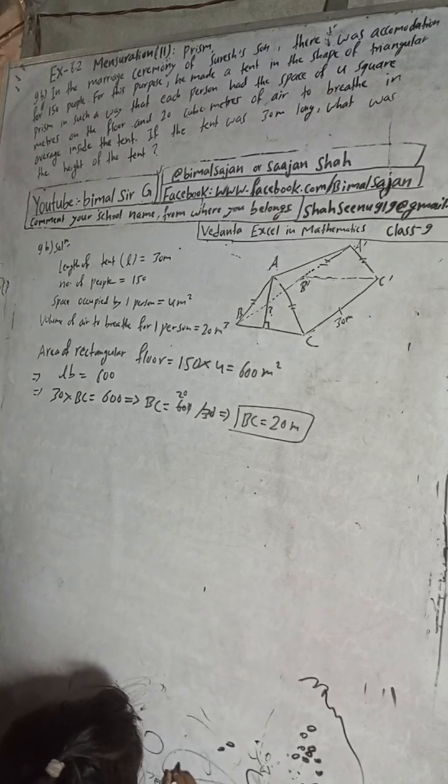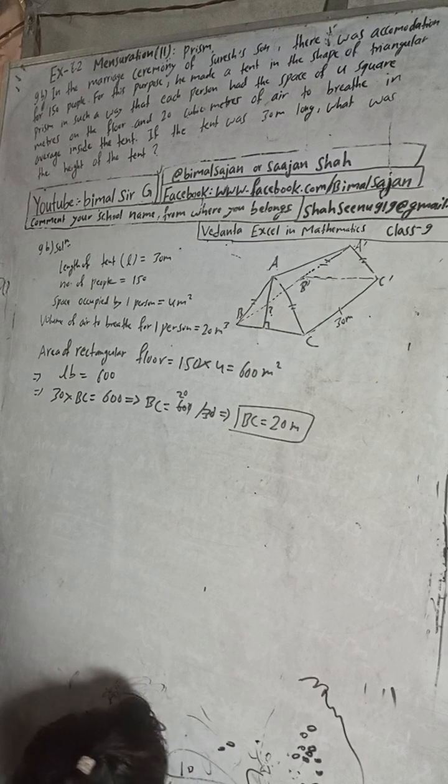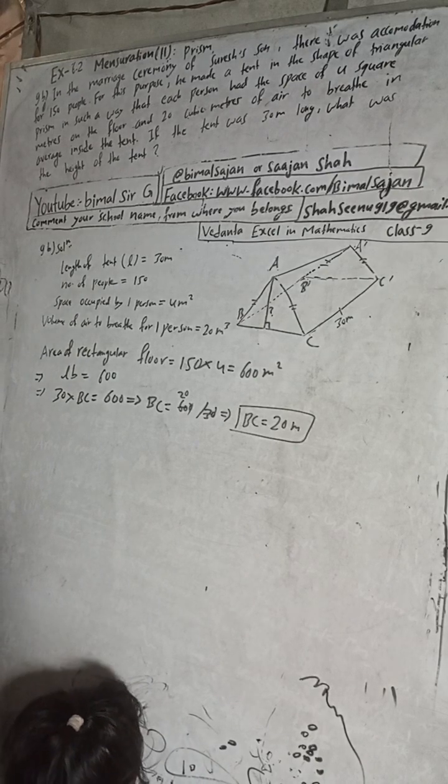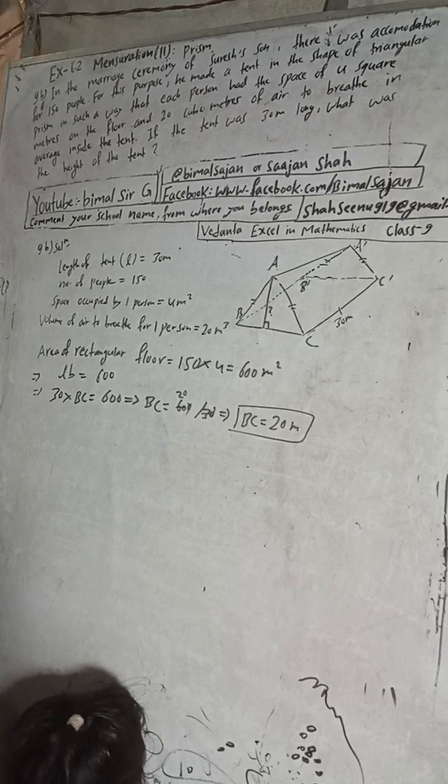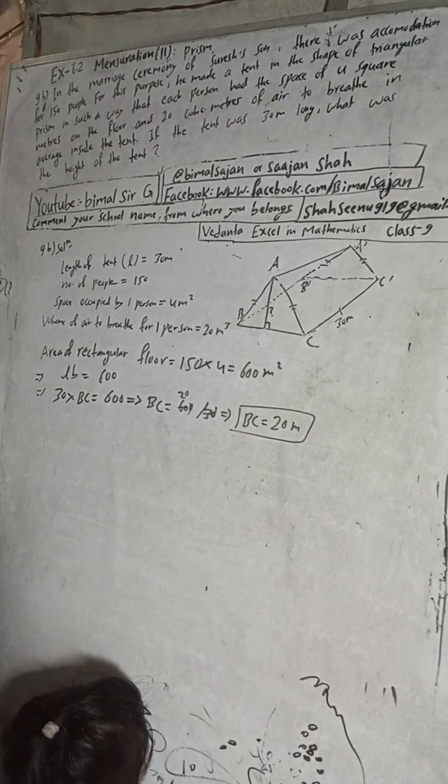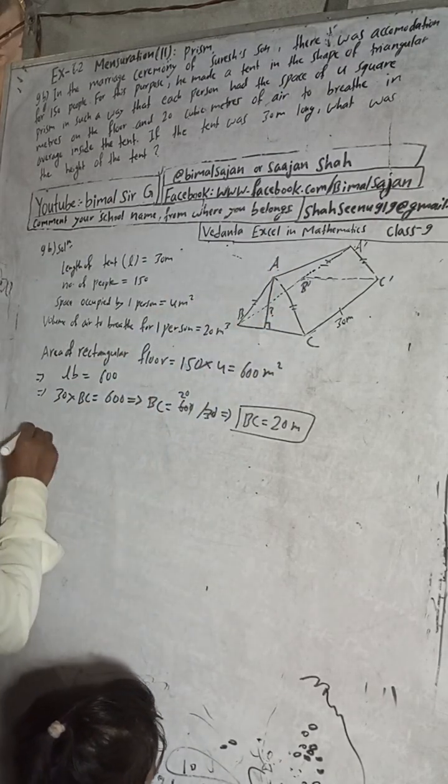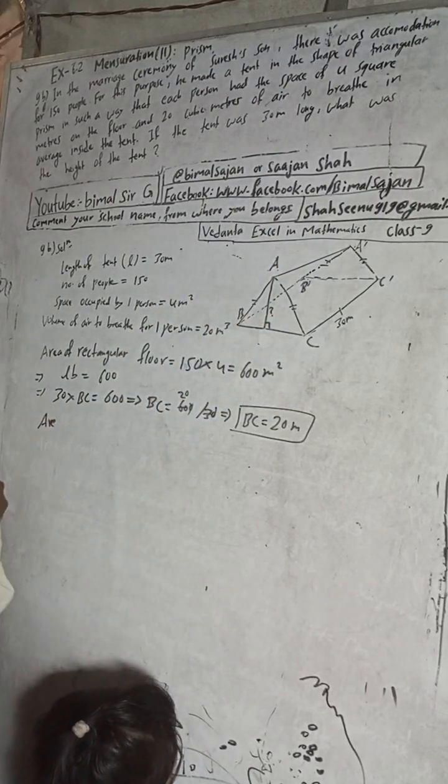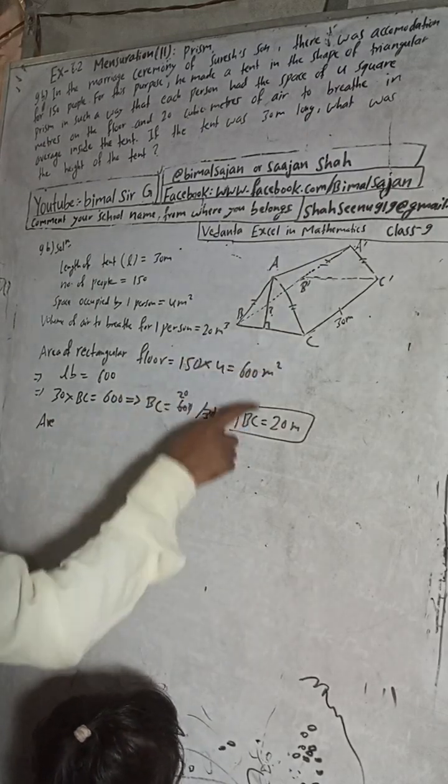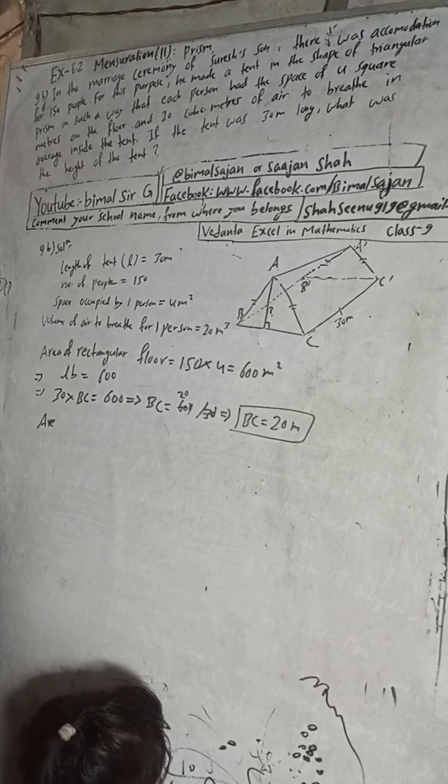This implies BC will be how much? BC is equal to 600 divided by 30. BC is equal to 20 meters.